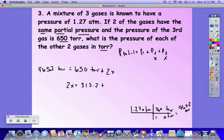2x is equal to 315.2 Torr. Dividing by 2, we get 157.6 Torr. So gas 1 and gas 2 would each have a pressure of 157.6.